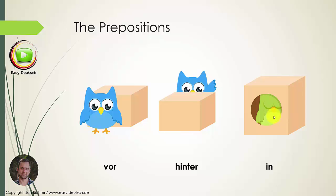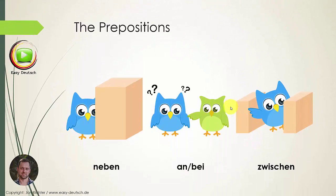In means 'inside' — always inside of something. For example: Der Vogel ist im Vogelhaus — the bird is in the birdhouse. Neben means 'beside,' so to the left or right of something. Der Vogel steht neben dem Stein — the bird is standing beside the stone.